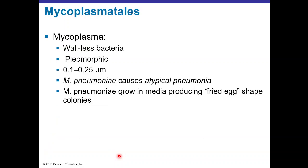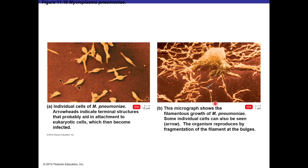Mycoplasmatales: Mycoplasma is the only bacteria without a cell wall, making it pleomorphic. It is a small bacteria measuring between 0.1 and 0.24 micrometers. Mycoplasma pneumoniae causes atypical pneumonia and produces fried egg-shaped colonies in media. Micrographs show its shape and filaments it extends for attachment into eukaryotic cells.